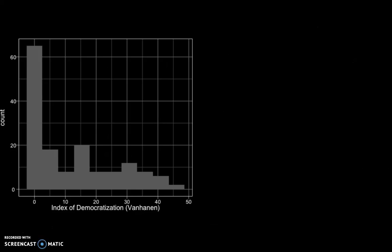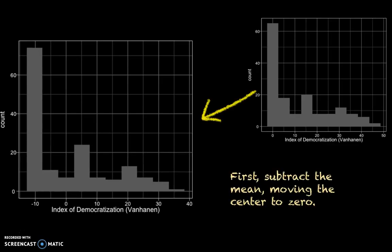Let's start with the democratization variable. This is a histogram of the original variable, which has a scale from zero to almost 50, with a lot of zeros and then the rest spread out. When we standardize, we take two steps. First, we subtract the mean. On the right you see the original plot; on the left the revised plot after subtracting the mean. The only real difference is that the zero has moved to the center of the distribution — where originally zero meant the lowest point on the scale, now zero means the position of the average country.